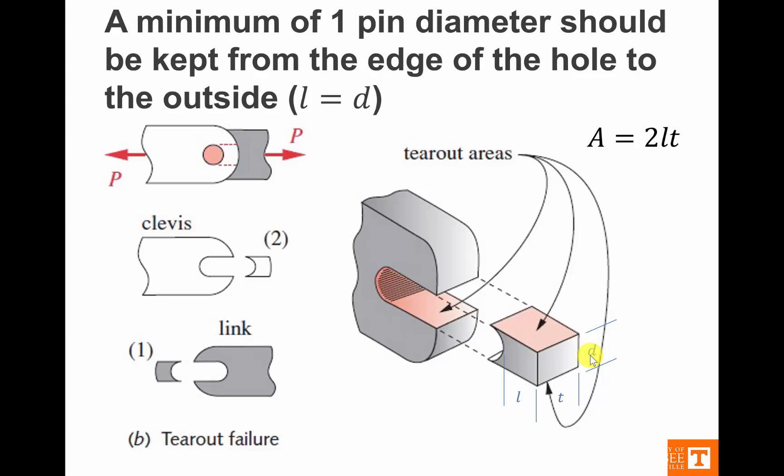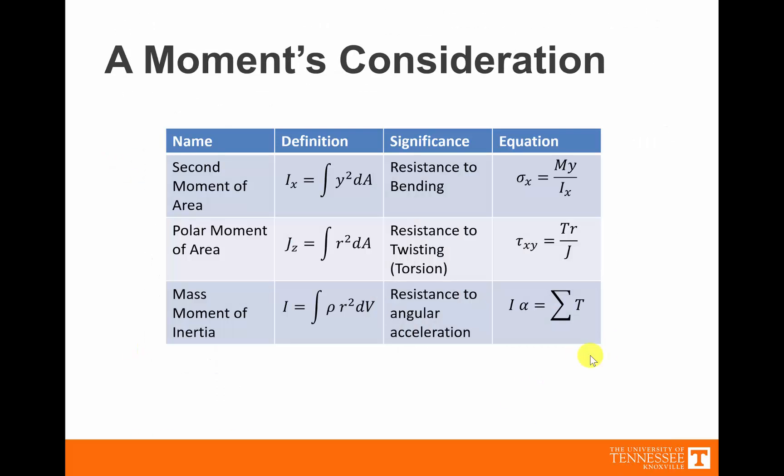Now we've talked about axial, pure shear, and bearing stresses. The next two — torsional and bending — have something to do with moments. Before we discuss those, let's take a minute to review what moments are. There are three things we regularly refer to as moments in engineering sciences. The first one is a resistance to bending: the second moment of area, which resists bending. There's a stress equation that has something to do with a bending moment, which we'll discuss in just a minute.